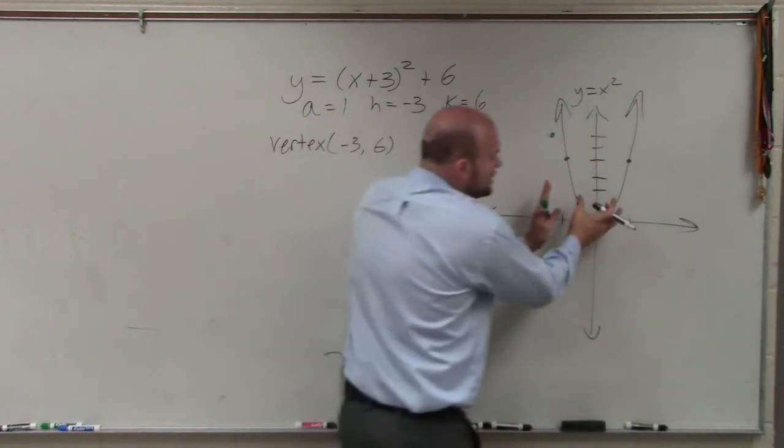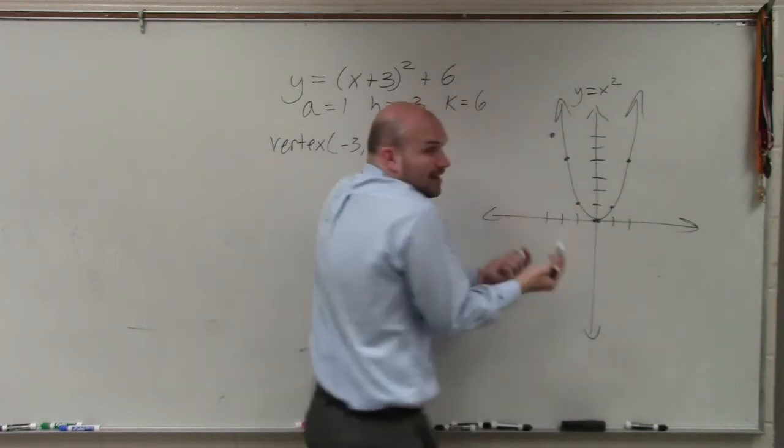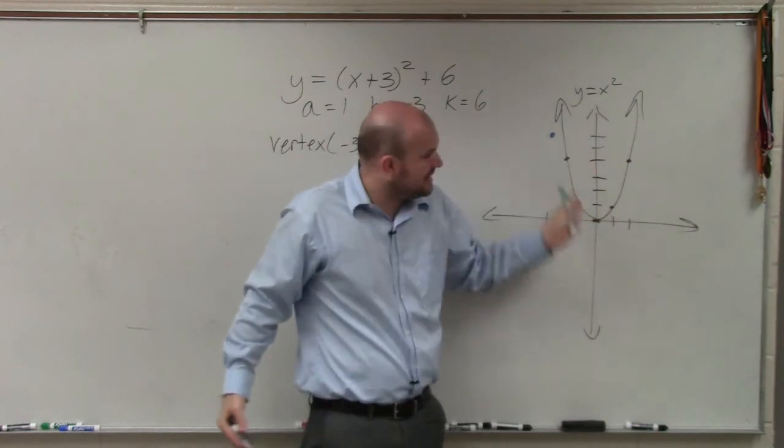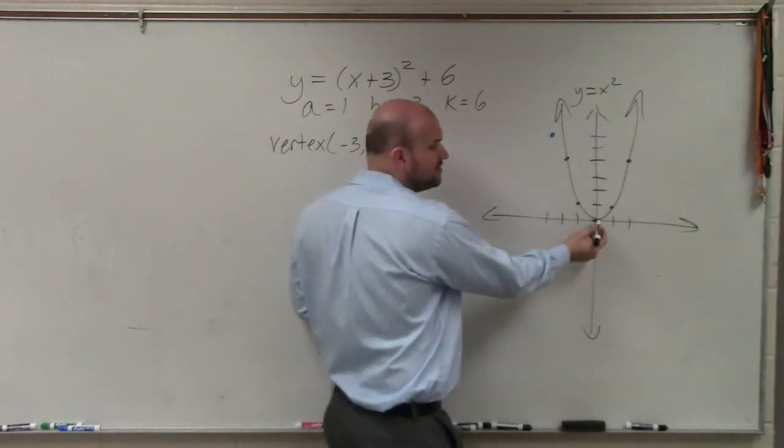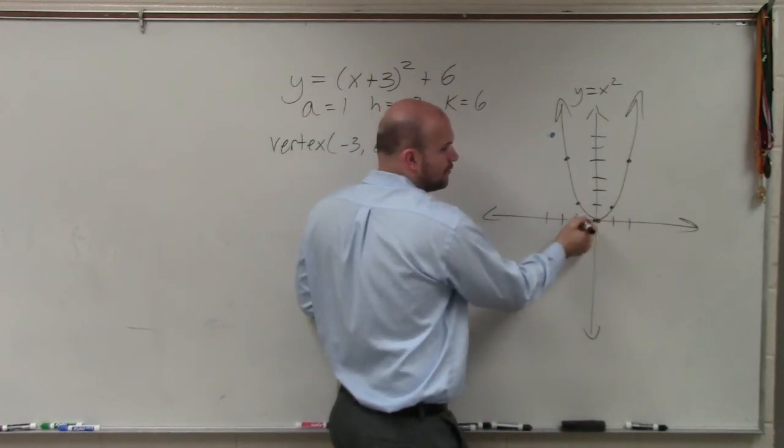So we don't need to change the shape of the graph. The only thing that changed is the orientation of the graph, which is now shifted left and shifted up. So all I need to do is redraw what this graph looks like. That's why understanding the parent graph is so helpful, because if I know the vertex, to find the next two points is to go over 1, up 1, over 1, up 1.